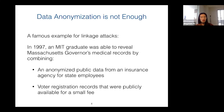The answer is: sometimes simply removing identifiable personal information is not enough. There is a famous example of a linkage attack. In 1997, an MIT graduate student was able to reveal the governor's medical records by combining two different sources of information — a public sanitized dataset with all identifiable information removed, and voter registration records accessible for a small fee. By combining these two sources she could re-identify the governor's medical records. That is why advanced techniques are needed to preserve individual privacy.